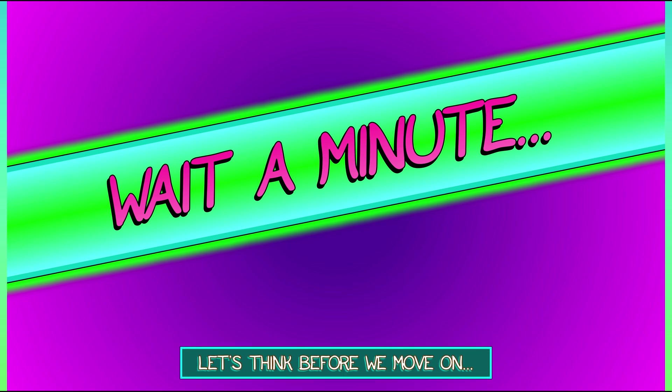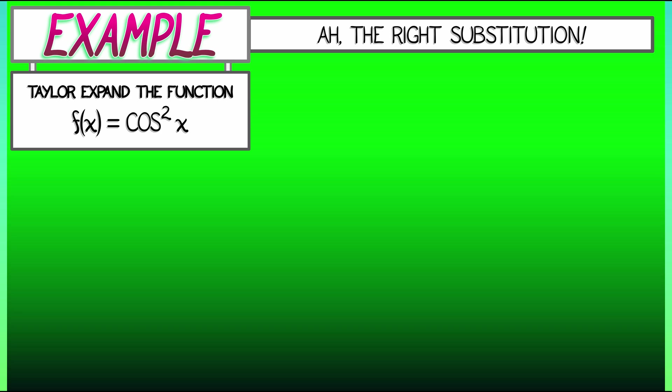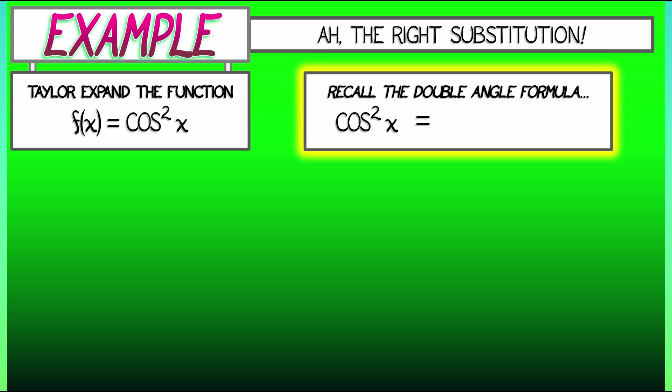Ah, yes. That's it. I remember now. Remember the double angle formula. That's the one that says cosine squared of x is 1 half times quantity 1 plus cosine 2x. Oh, that's a useful formula.